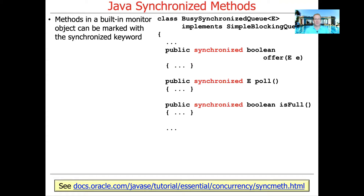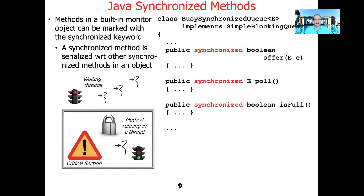If you want to have synchronized methods, it's absolutely trivial — you simply mark them with the synchronized keyword. In this case, we're going to make offer, pull, and isFull synchronized methods. What the keyword synchronized means here is that if there are multiple threads calling synchronized methods on the same object, then only one of those threads will be able to run inside that method on that object at a time. If multiple threads are calling methods on different instances of a monitor object, those can run concurrently. It's only when multiple methods are called on the same object that synchronized matters, because under the hood there's an intrinsic lock used to serialize access to the state of the monitor object.